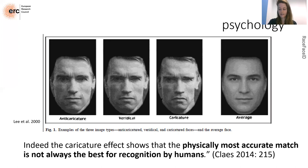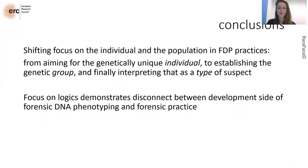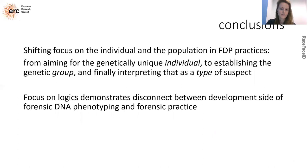In conclusion, I've shown a shifting focus moving from the genetically unique individual in the research lab, to establishing genetic groups in the forensic lab, and finally to that being interpreted as a particular type of suspect in the police investigation — showing how, in the translations between these settings, race is slowly introduced. Importantly, there is a disconnect between the development side of forensic DNA phenotyping and forensic practice: the accuracy aimed for in the research lab is not what works best in forensic and police practice. I hope to discuss these tensions further, and I look forward to your questions.